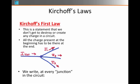So for every junction in a circuit, we're going to write an equation that looks something like this. The current coming into the junction, I total, is going to equal the sum of all the currents leaving that junction: I1 plus I2 plus I3.